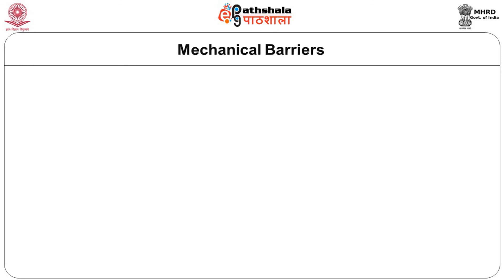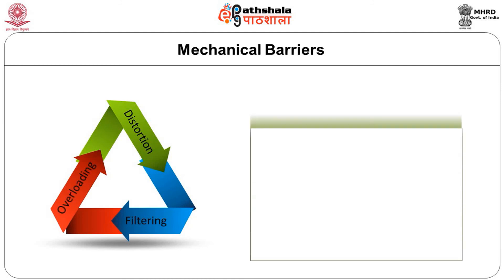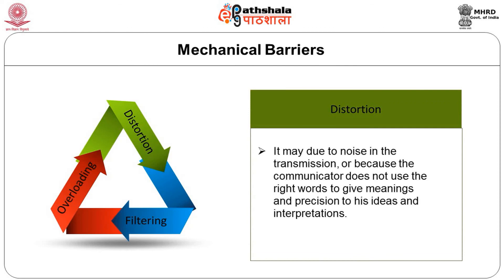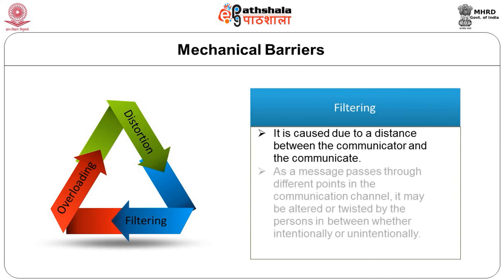Mechanical barriers are caused by distortion, filtering, and overloading of the communication channels. Distortion may be due to noise in the transmission or because the communicator does not use the right words to give meaning and precision to his ideas. Filtering is caused due to the distance between the communicator and communicatee — as a message passes through different points in the channel, it may be altered or twisted by persons in between, whether intentionally or unintentionally.